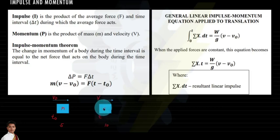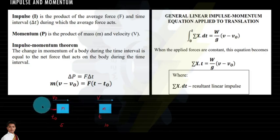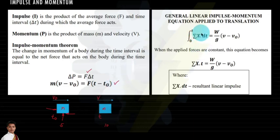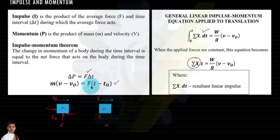Identifying the forces involved: there is the applied force, the normal force, and the friction force. The net force is the summation of forces along the direction of motion. We can also use the summation of forces along x, since that is the net force. And (W/g) is equivalent to mass.